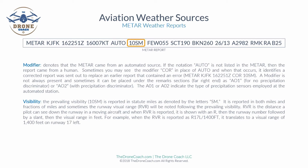Next we have visibility. The prevailing visibility is reported in statute miles, denoted by SM, and reported in both miles and fractions of miles. Sometimes the Runway Visual Range, indicated as RVR, will be noted following the prevailing visibility. RVR is the distance a pilot can see down a runway in a moving aircraft. When reported, it's shown with an R, the runway number, a forward slash, and then the visual range in feet — for example, R17L/1400 means 1,400 feet on runway 17 left.